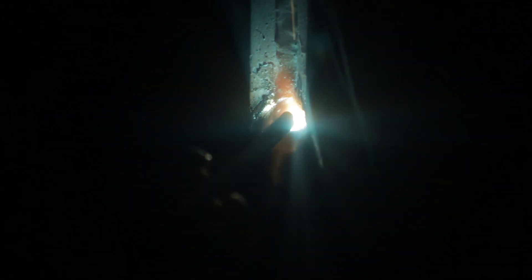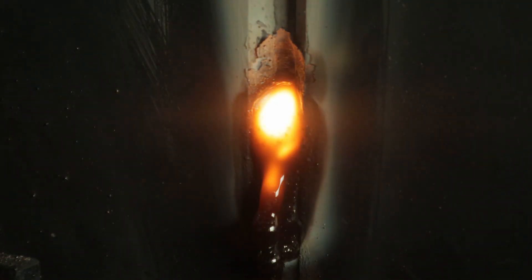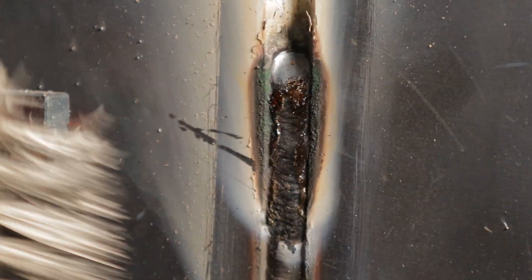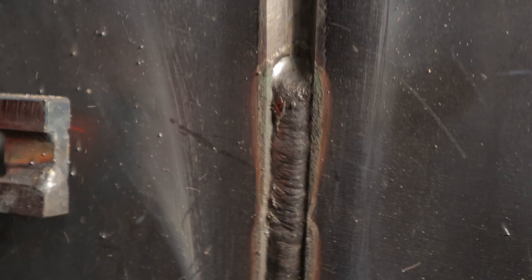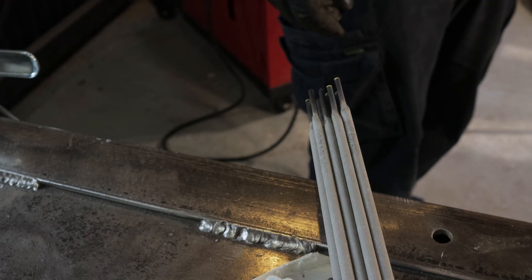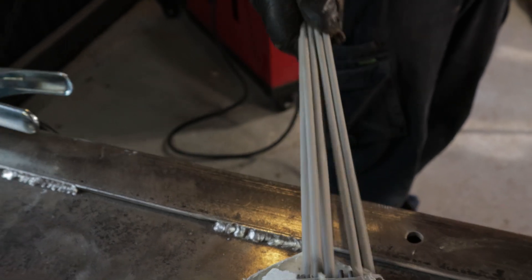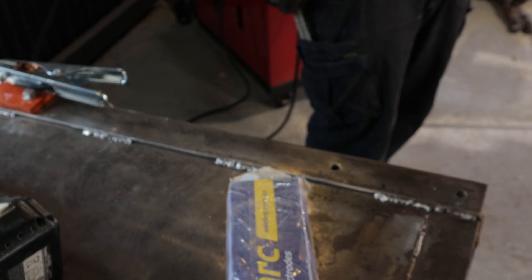Once the fill run is complete I'll remove any inconsistencies of highs and lows and I'll also tidy up the landing for the next run to make it easier to see. For the 2G cap I use the same type of low hydrogen rod the 7016, but they are eighth inch or 3.2 millimeters. I have the amperage set to 120 amps.